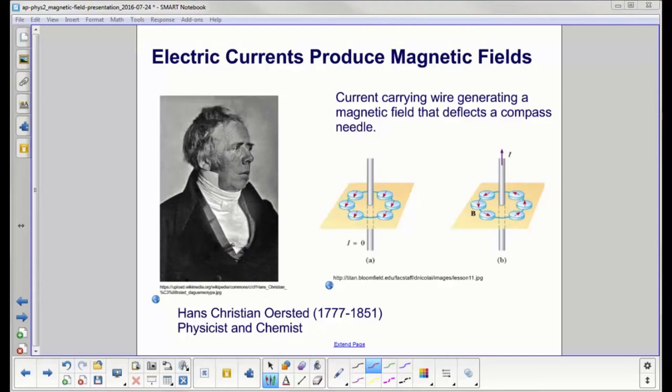Here's a picture of Hans Christian Ørsted, who is a physicist and chemist, and here's how a current-carrying wire generates a magnetic field that deflects a compass needle. Here you have no current and all the compass needles are pointing north. You put a current and all the compass needles go around in a circle. That indicates the magnetic field circles the wire. The key takeaway is the magnetic field encircles the wire. There are also magnetic fields up here. We could put a whole stack of little compasses and they'd all be acting the same.